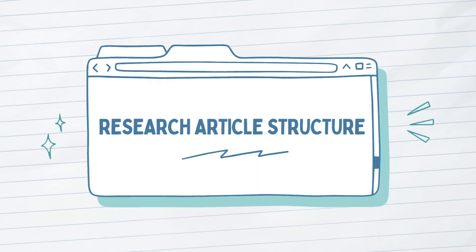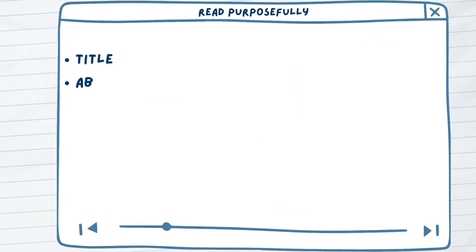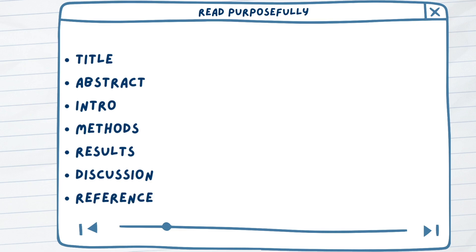To begin, let's review what the overall structure of a research article is. Most scientific articles are organized as follows, with each part of the publication, from the title to its references, providing critical information about the paper you are reading. However, all this information can make the paper seem initially overwhelming, so it's important to be purposeful in how you approach these different sections.